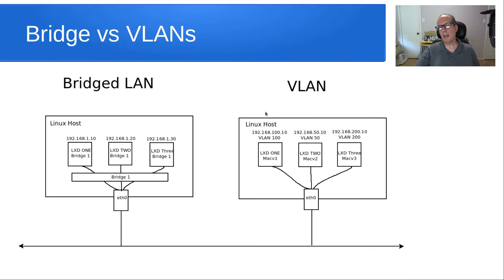On the right we have an implementation using Mac VLAN with three VLANs: VLAN 100, VLAN 50, and VLAN 200. We have three VLANs and three address ranges — 100.10, 50.10, and 200.10 — and yet they all communicate through the same Ethernet interface on the same cable. With VLANs, you can have multiple networks running on the same cable and even on the same adapter.